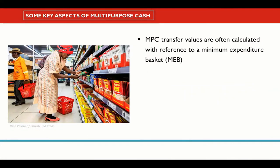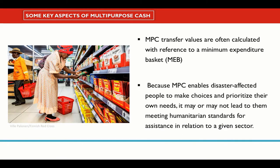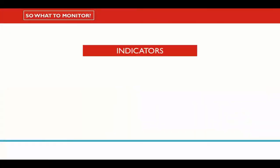MPC transfer values are often calculated with reference to a minimum expenditure basket, or MEB, which will encompass items and costs from a range of different sectors, as well as costs that may not sit within a specific sector. Because MPC enables disaster-affected people to make choices and prioritize their own needs, it may or may not lead to them meeting humanitarian standards for assistance in relation to a given sector. Drawing on this aspect of multi-purpose cash, let's look at some key implications for monitoring.